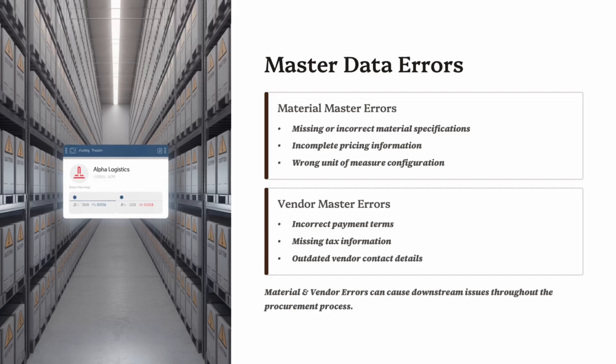Duplicate Vendor Records can also lead to confusion and duplicate invoices. The best approach is prevention: always review required fields when creating master data, use SAP consistency checks and mandatory field controls, and run reports like MKVZ Vendor List or MM60 Material List to identify inconsistencies. Remember, bad master data equals bad business. Clean and accurate master records are the foundation of every MM process.